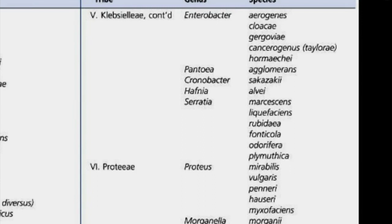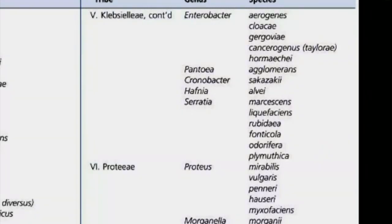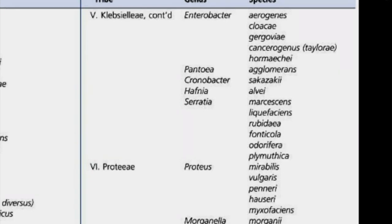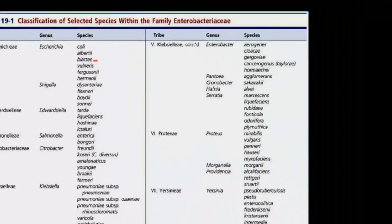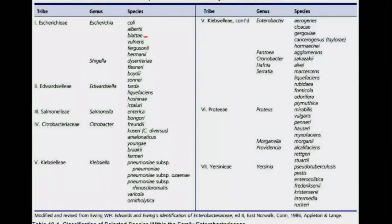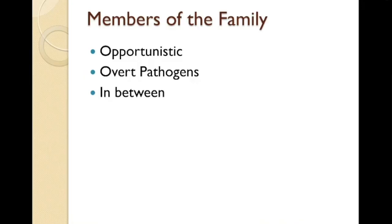For Proteeae, we have Proteus mirabilis, vulgaris, penneri, hauseri, and myxofaciens. We also have Morganella morganii and Providencia alcalifaciens. These are some of the members of the several tribes under the family Enterobacteriaceae.